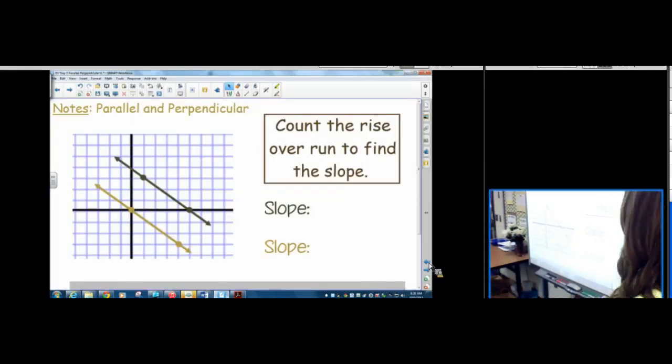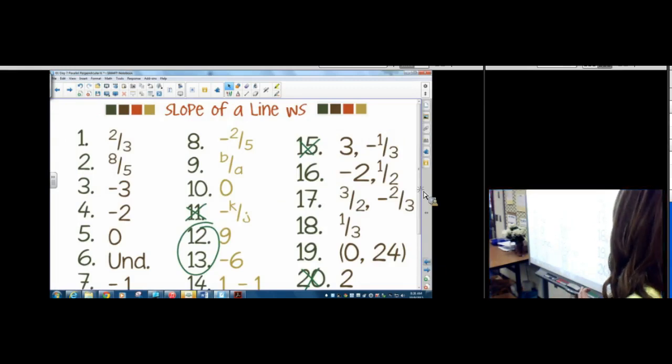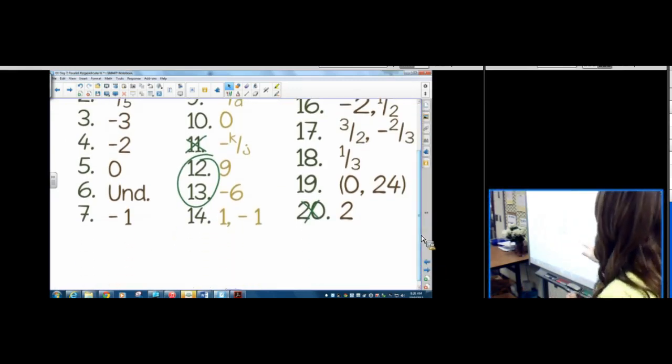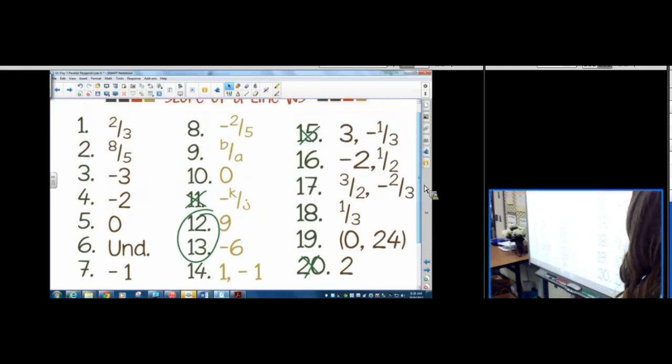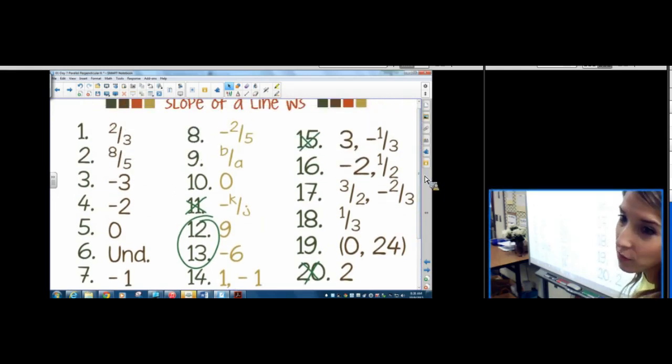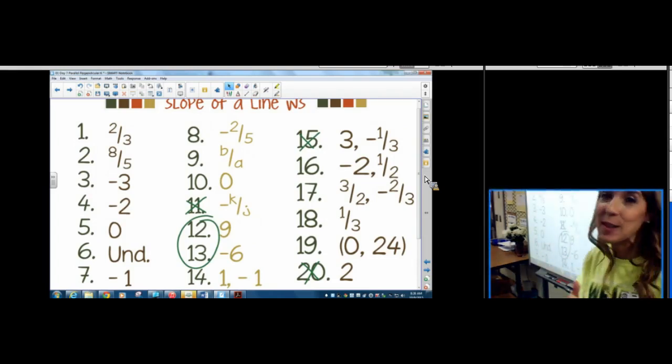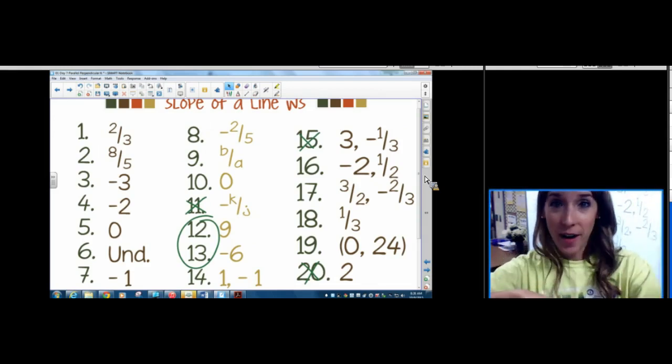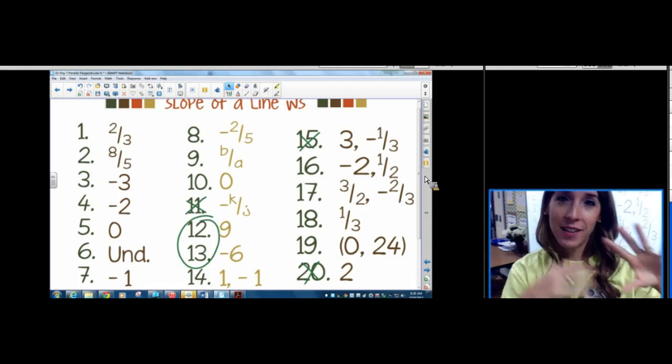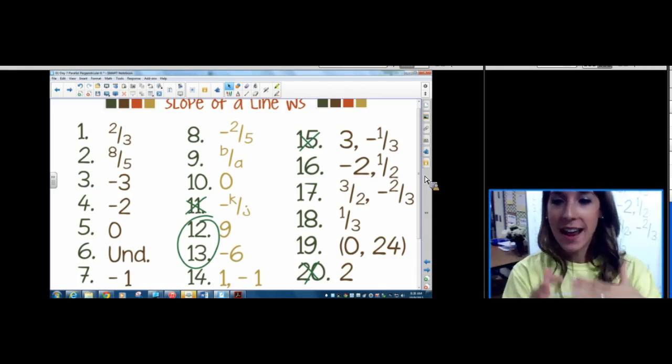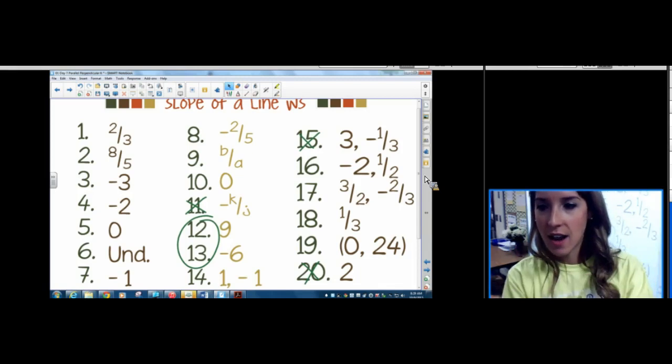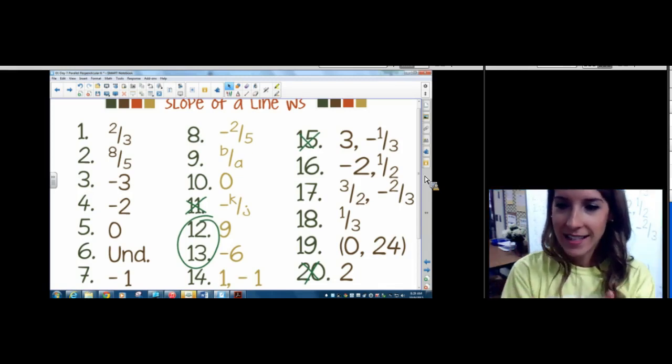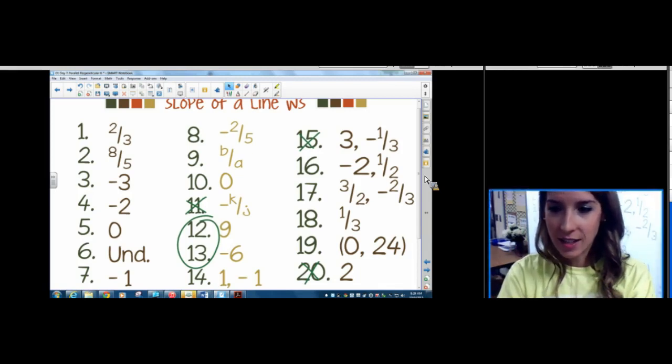What one of the students was telling me is that if you notice on all of these, we have 1 and negative 1. It's kind of looking like the warm-up. 3, negative 1 third. 2, negative 2. 1 half. 3 halves, negative 2 thirds. That's a clue. All of those created the right angle in the triangle, right? So perpendicular, opposite, reciprocal, it's all connected. So last night's homework leads into tonight's lesson.